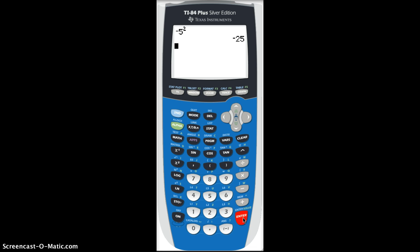the calculator is going to correctly tell you that it is negative 25. Although we all know that if you take negative 5 times negative 5, which is negative 5 squared, it should come out to be positive 25.